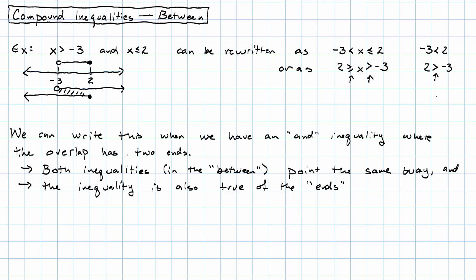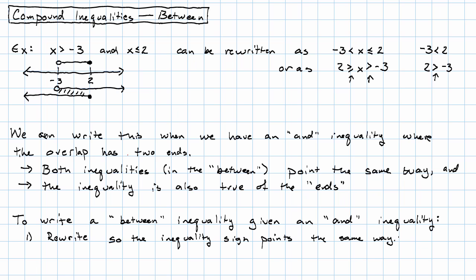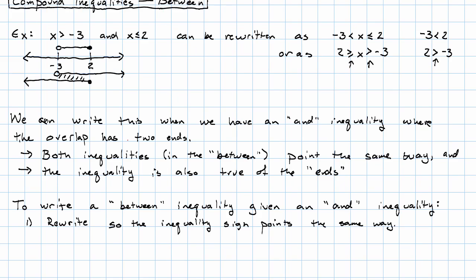How do we actually go about writing down a between inequality? How did I come up with this? Well, we rewrite our inequalities so that the inequality sign points the same way. And in general, if you're doing this, using less than signs ends up a little bit nicer.